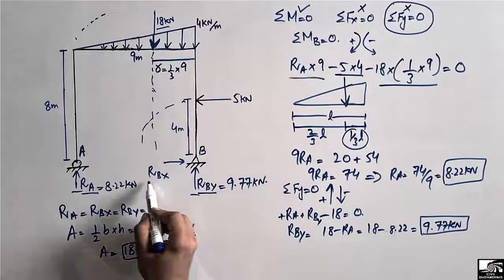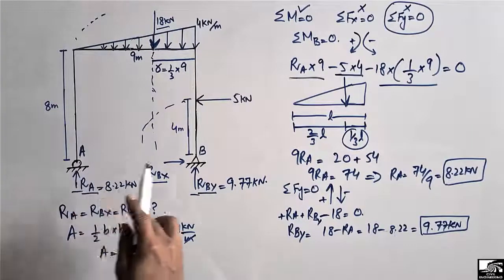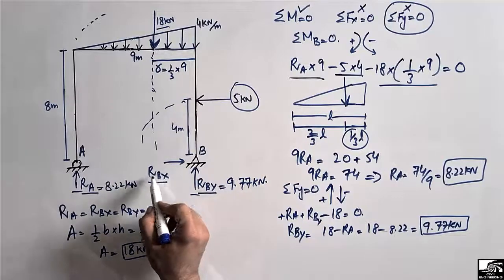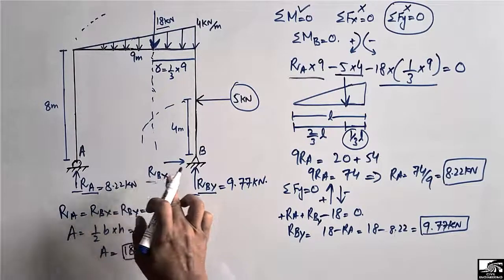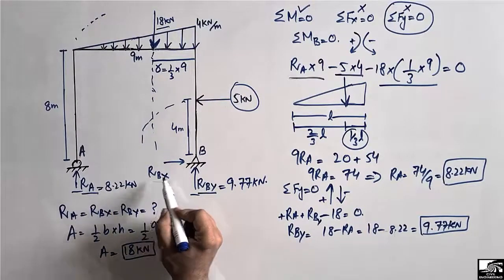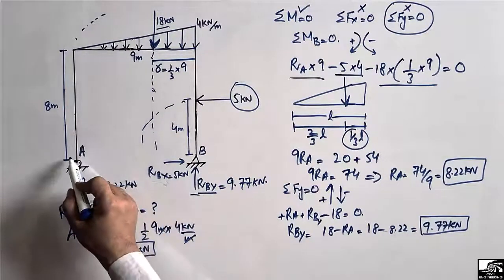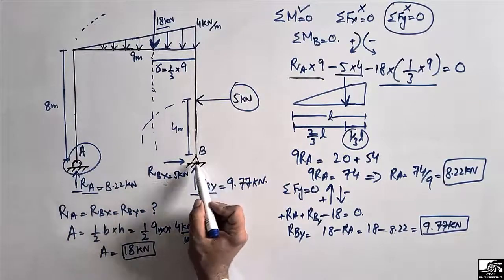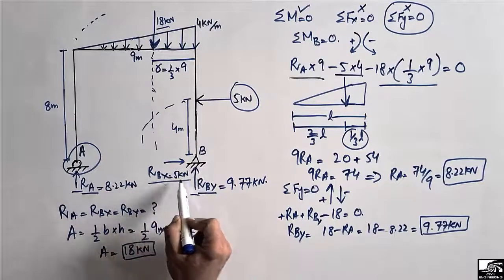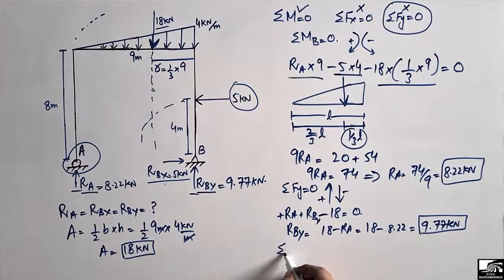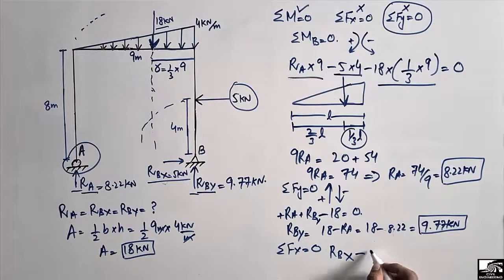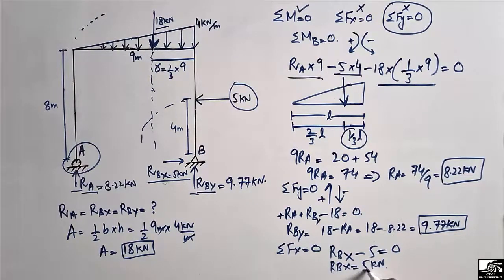To find Rbx, we note that there is no other support to take horizontal load, so all horizontal load is taken by the hinge support. Using summation of horizontal forces equal to zero: Rbx minus 5 kilonewtons equals zero, so Rbx equals 5 kilonewtons. The hinge is the only support that can resist horizontal forces, so Rbx equals 5 kilonewtons.